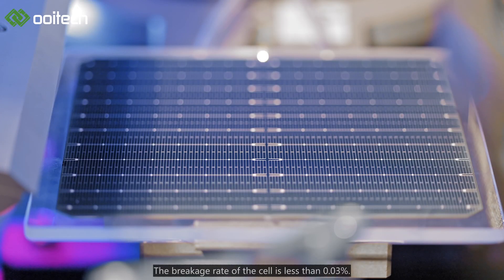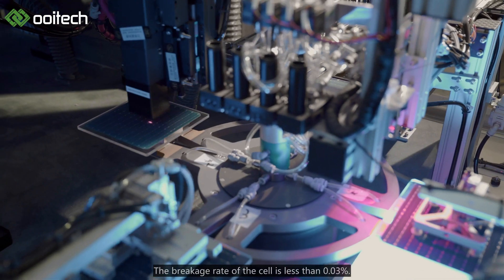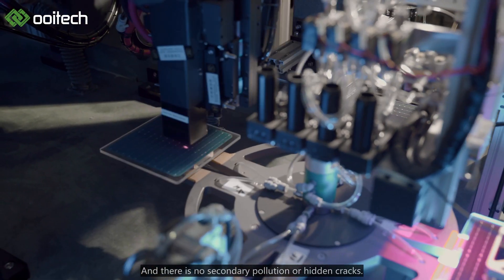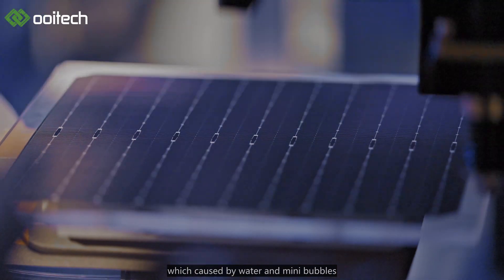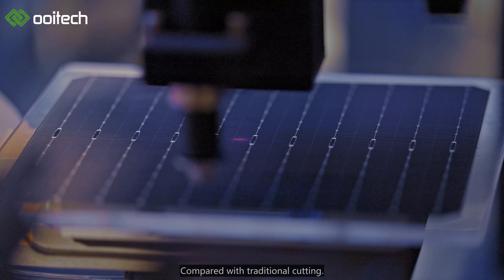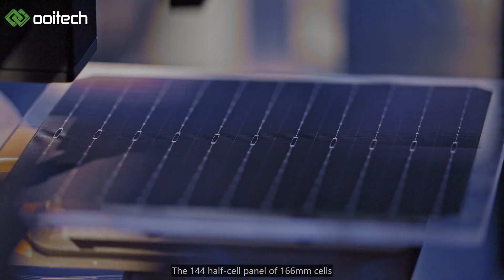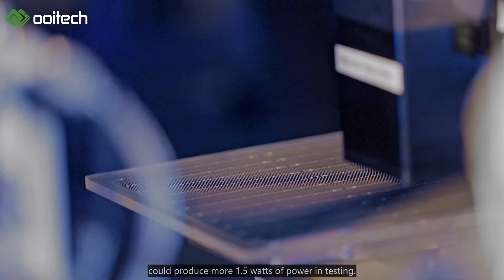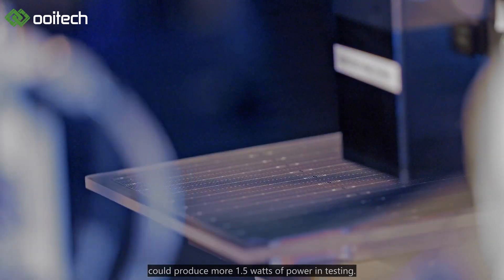The breakage rate of the cell is less than 0.03%, with no secondary pollution or hidden cracks caused by water and mini-bubble rupture after cutting. This results in better electrical performance compared with traditional cutting. The 144 half-cell panel of 166mm cells can produce 1.5 watts more power in testing.